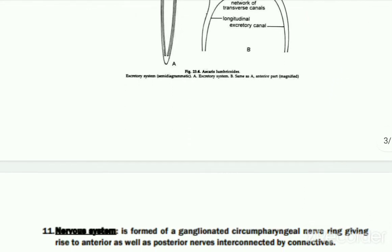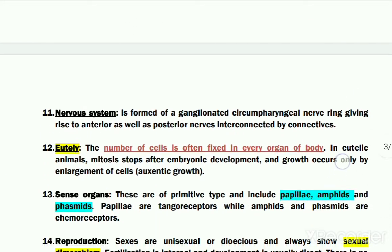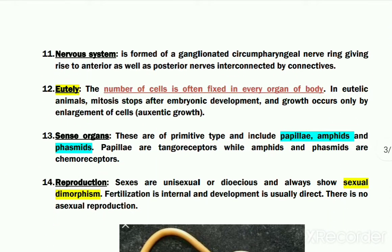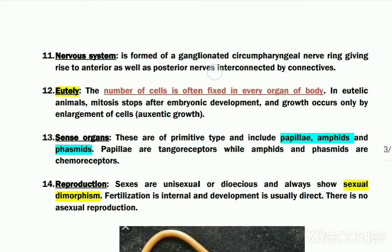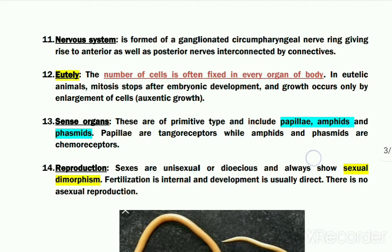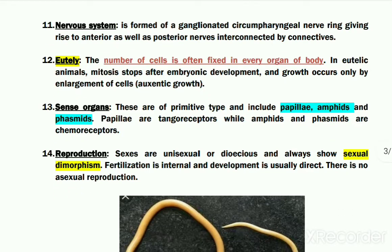Regarding their nervous system: these organisms have a quite well-developed nervous system consisting of a nerve ring and nerves.